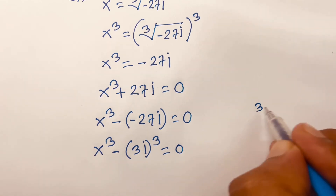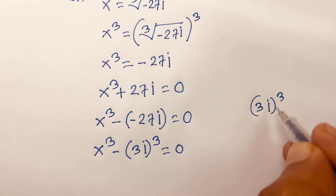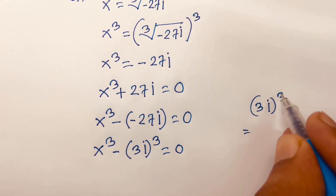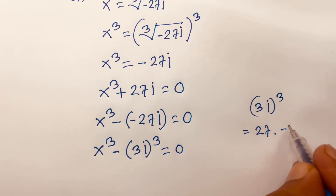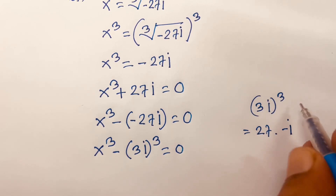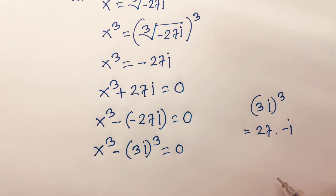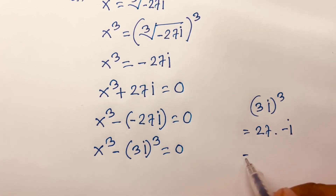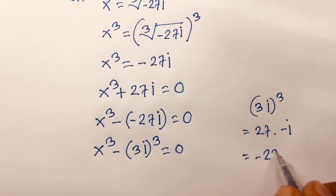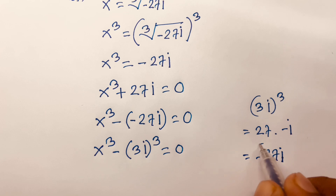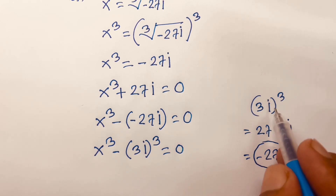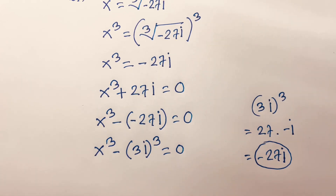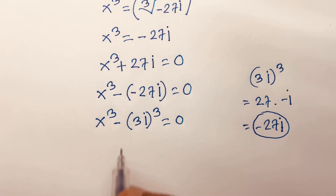We verify that (3i)³ equals minus 27i: 3³ is 27 and i³ equals minus i, because i² equals minus 1. So (3i)³ equals minus 27i, confirming that minus 27i equals (3i)³.